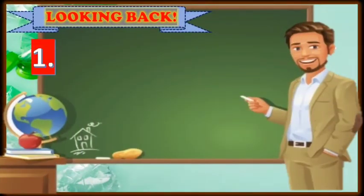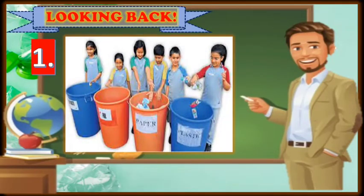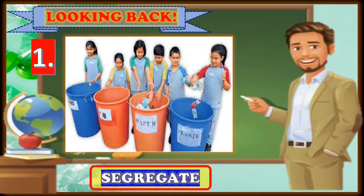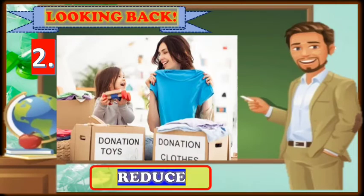For our activity, all you have to do is look at the picture and identify what kind of proper waste disposal is shown in each picture. For picture number one, the picture is telling us that they are segregating. For picture number two, the technique used is what you call reduce — donation is a process or a way of reducing waste materials.